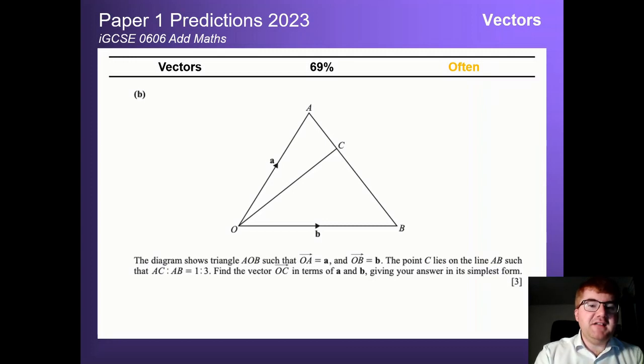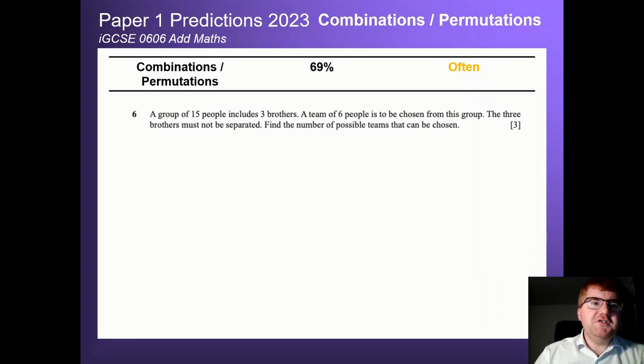Vectors at 69% as well and this comes in a couple of different forms. Vector algebra being the most common one which you see in front of you here, but they could ask it in terms of position vectors and vector equations too. Again, more of a paper 2 style question. On to combinations and permutations, I'm sure this is a topic you've been dreading if you've studied the course, coming in at 69%. This is one of the toughest topics on the course, and more because they can vary the question so much. You need to be very well aware of the different combinations and permutations of the question that could appear, so make sure you revise this very thoroughly.